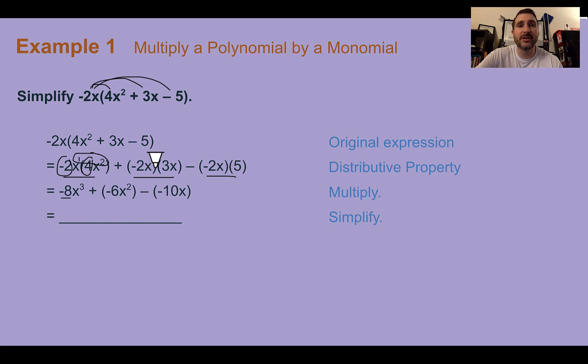Then we do the same thing for the next set of terms. -2 times 3 is -6, and then x¹ times x¹ becomes x². Last, we have -2 times 5, which is -10. There's just a single x with nothing to multiply it by, so it's still just there. Now simplifying this a little bit more to fix some of these double signs. If you have double signs, same sign like here is going to be positive. Different signs is going to be subtraction. So we would end up with -8x³ - 6x² + 10x.